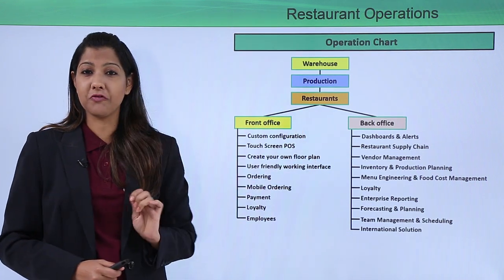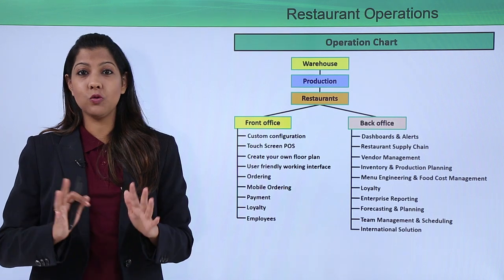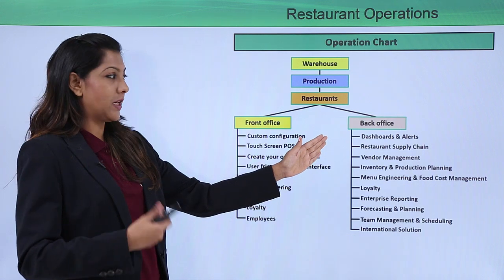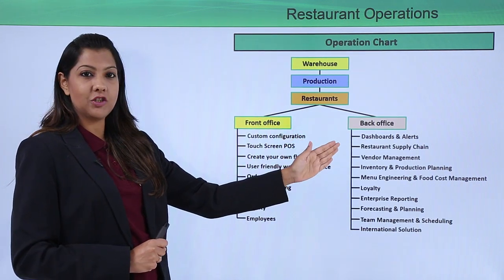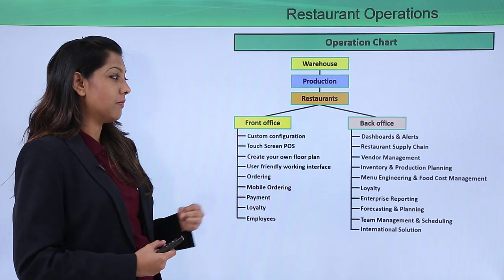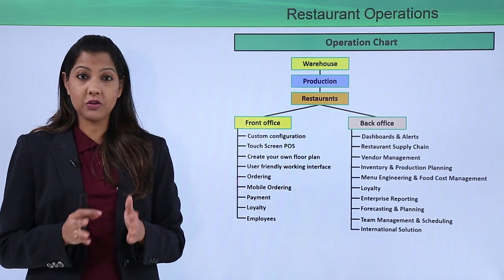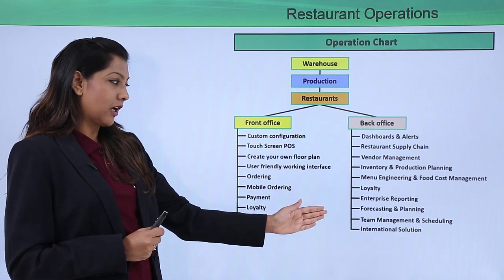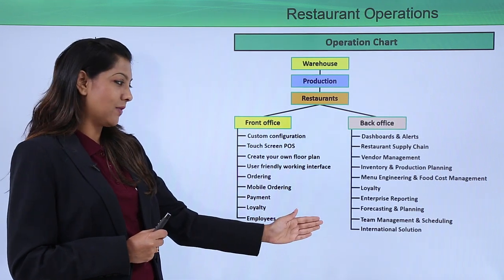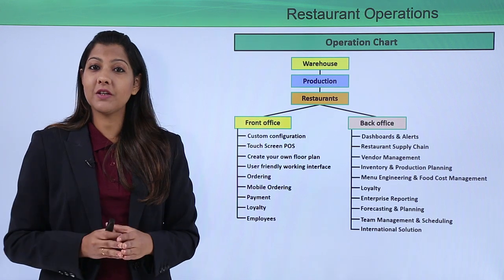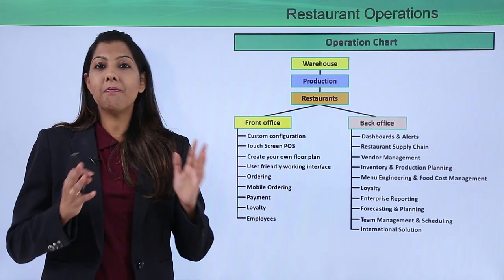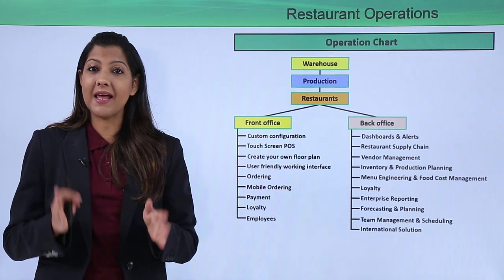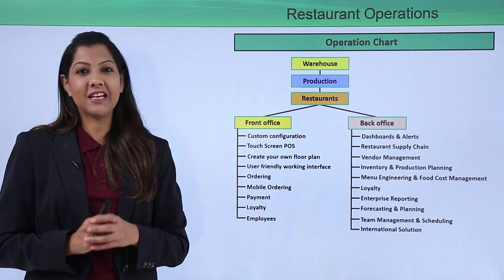On the back office side, you have people who cannot be seen by customers. This includes dashboards and alerts to send out to customers, restaurant supply chain, inventory management, your marketing team, menu engineering, making sure food costs are correct, loyalty programs, enterprise reporting, forecasting and planning, team management and scheduling, as well as international solutions. The goal is to ensure that your back end and front end are working in a synergized, balanced manner so that the restaurant functions effectively.